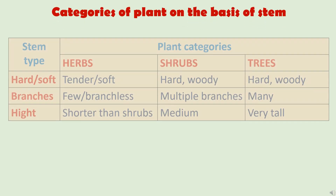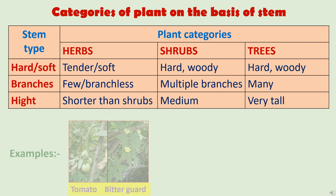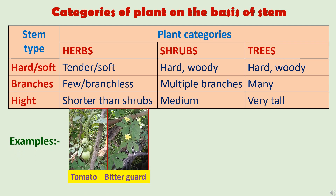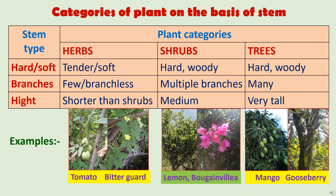On the basis of stem type, plants are categorized as herbs, shrubs, and trees. Herbs are very short in height with tender, soft stems; they bear very few branches or are branchless — examples are tomato and bitter gourd. Shrubs are medium-height plants, hard and woody, with multiple branches arising from below the ground level — examples are lemon and bougainvillea. Trees are very tall, hard, and woody plants; their main stem is called the trunk, from which many branches arise bearing leaves, fruits, and flowers — examples are mango, gooseberry, and guava.